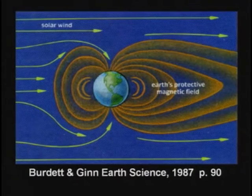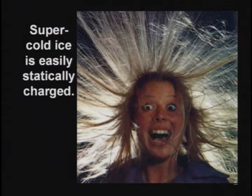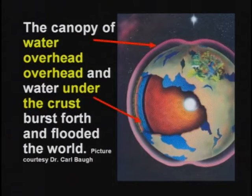The super cold snow would land mostly around the poles because super cold ice is not only affected by the magnetic field, it's easily statically charged — like the Van de Graaff generator where they make your hair stand up. As this ice meteor came flying toward the Earth, it broke apart. Pieces would settle in around the poles mostly, causing the Earth to wobble for a few hundred or even a few thousand years. The canopy of water overhead collapsed and it rained 40 days. The water underneath the crust came shooting to the surface.